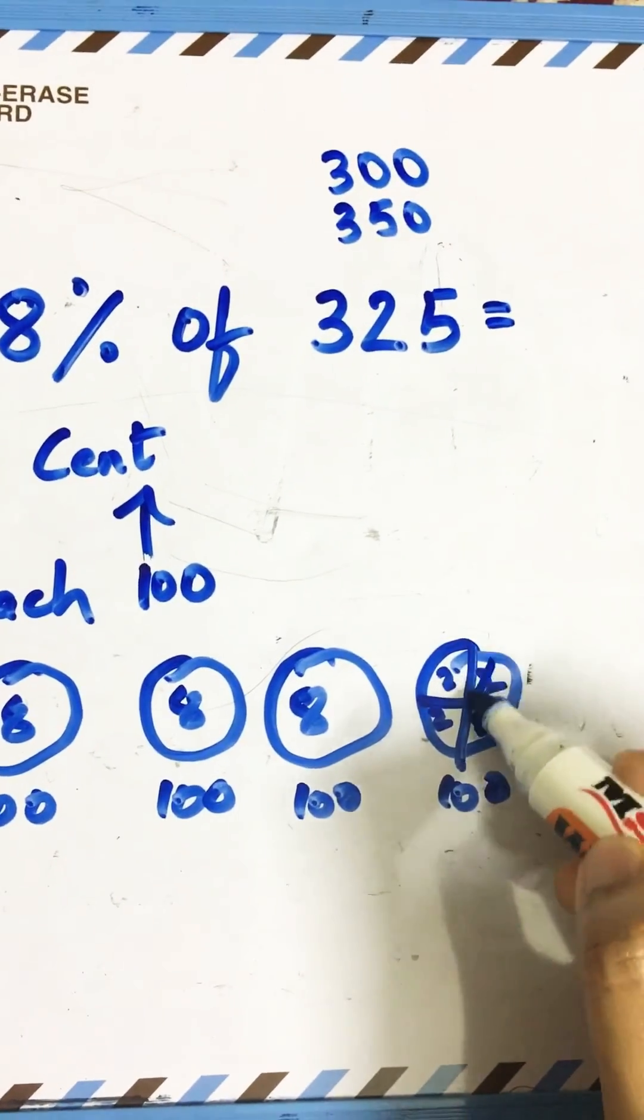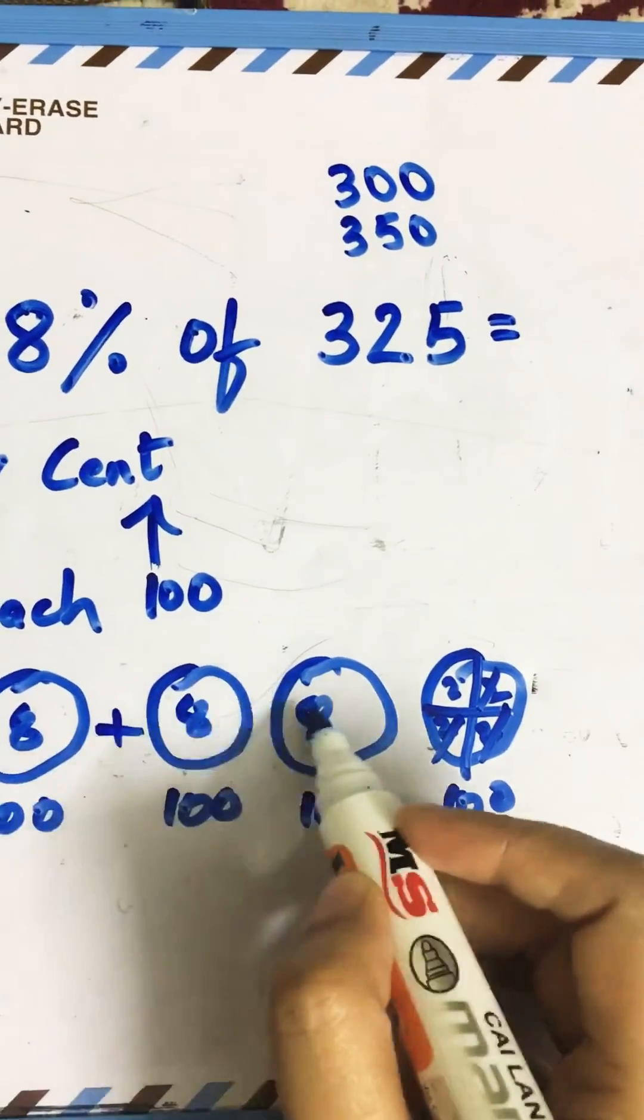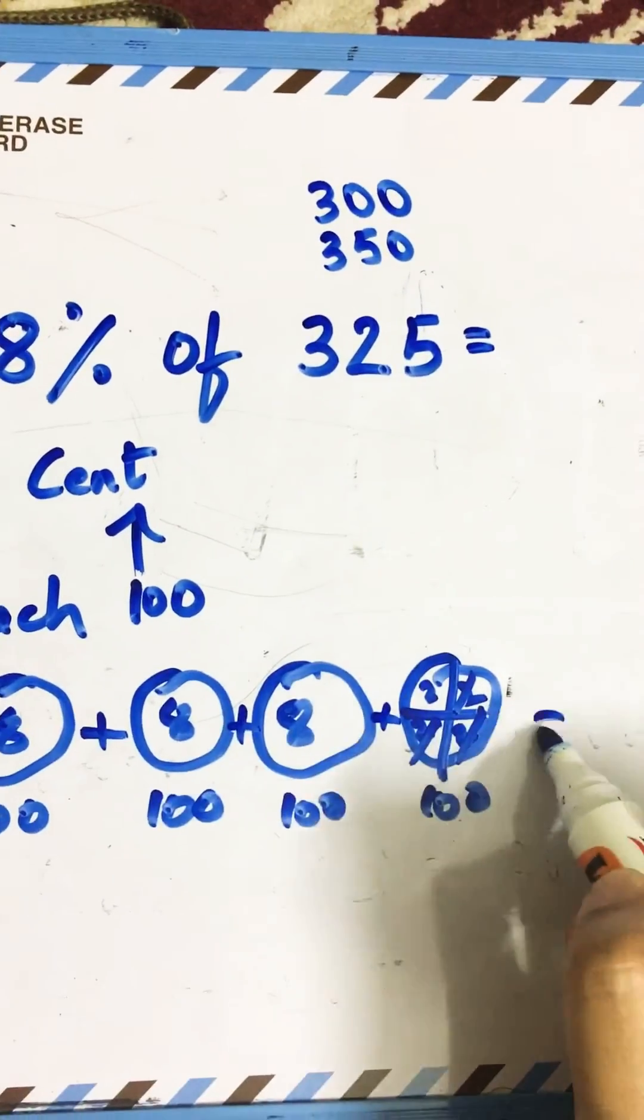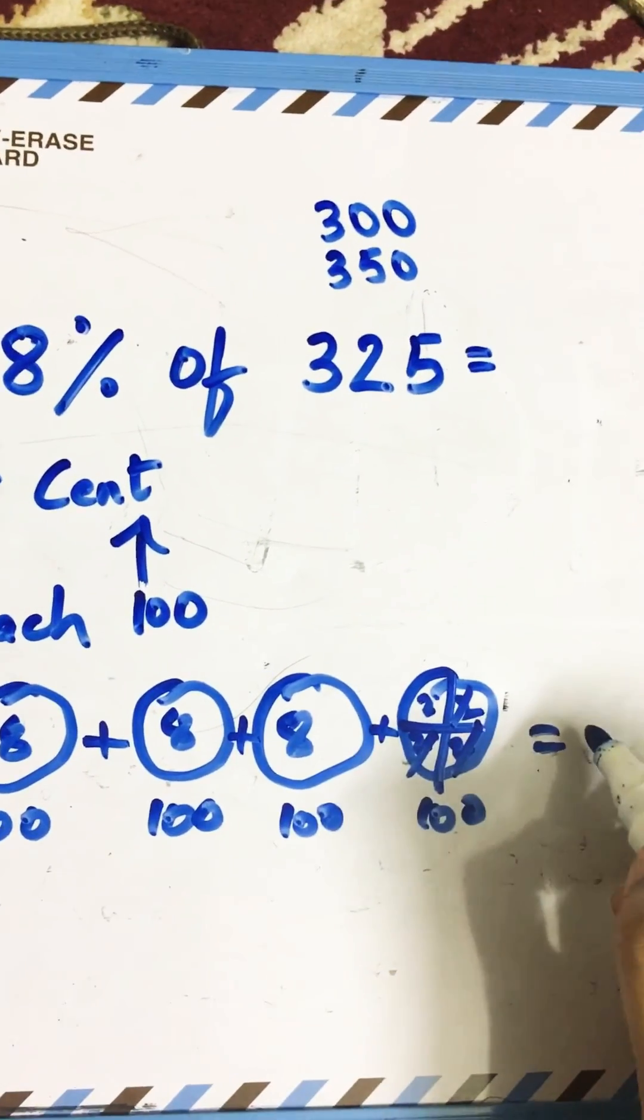So we'll add up all the eights and this two. Eight plus eight plus eight plus two will give you 26.